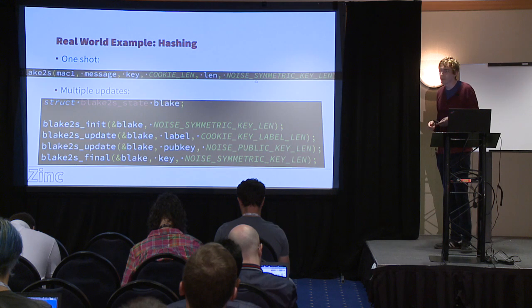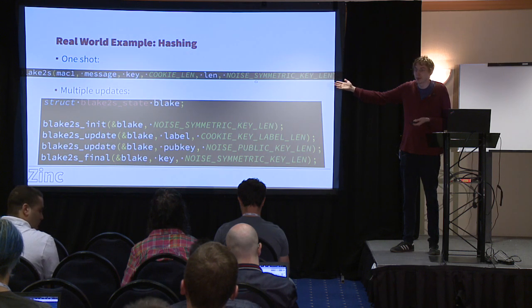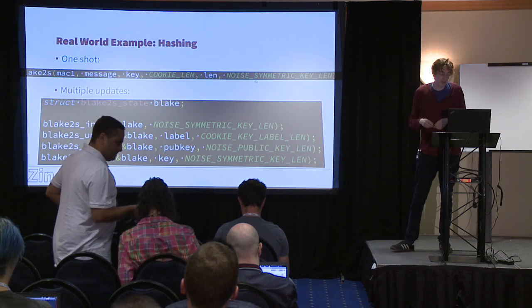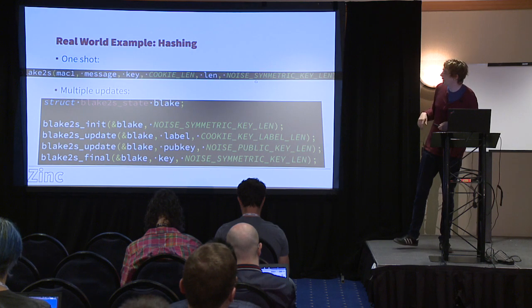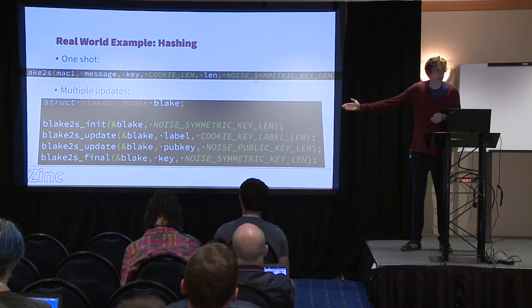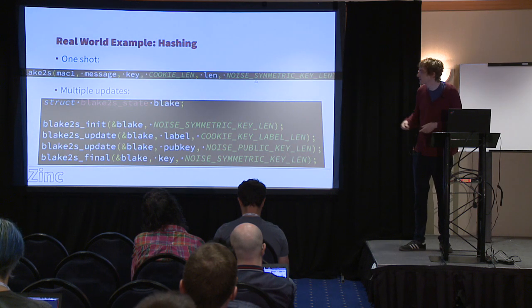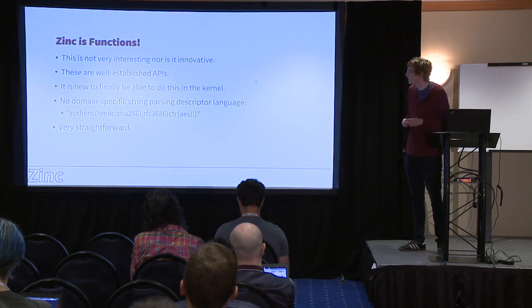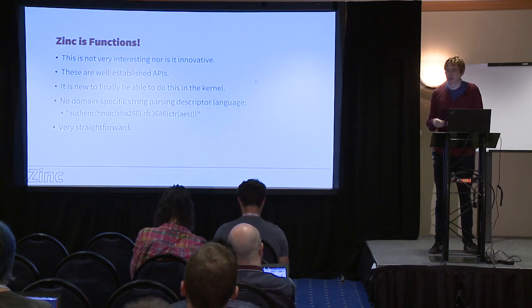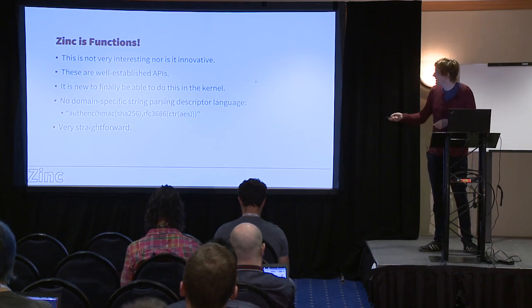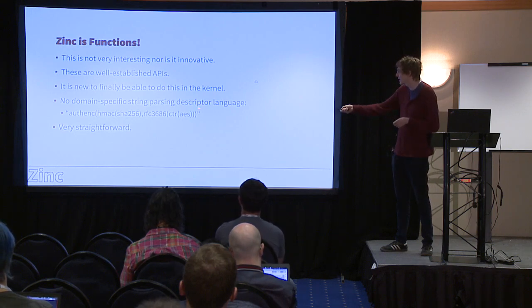Here's a real-world example from WireGuard of what hashing looks like in Zinc. You can do it in one shot where you just call it with the input buffer and output buffer. Or in classic fashion there's init to get it started, update as you feed data into the hash function, and final to get the actual hash out. This pattern is not new or innovative - it's how hash functions work in basically every crypto library. We're going for well-established conventions that are easy to understand and read.